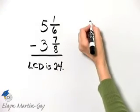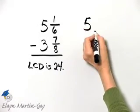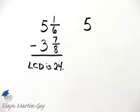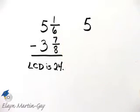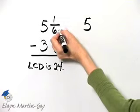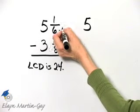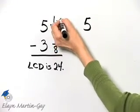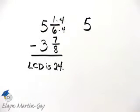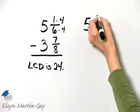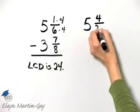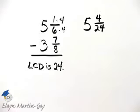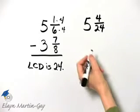So we'll rewrite these. Now what would I multiply 1 6 by? In other words, what would I multiply the denominator of 6 by in order to have a product of 24? I multiply 6 by 4, and if I do that in the denominator, I must also do that in the numerator. So I have 1 times 4 is 4, over 6 times 4, or 24. That is equivalent to 1 6, but with a denominator of 24.